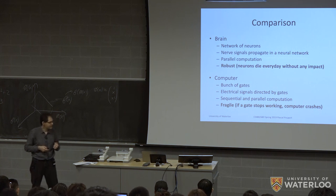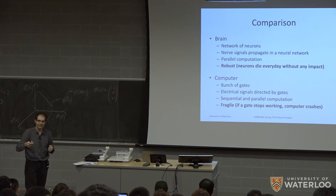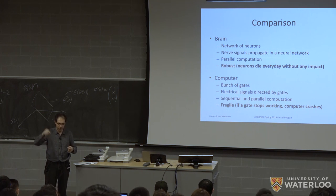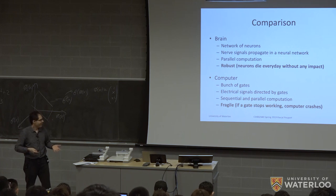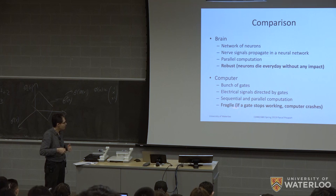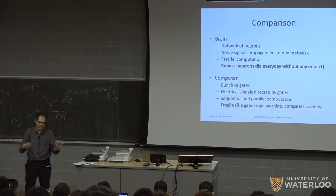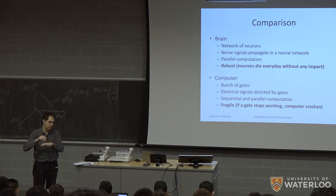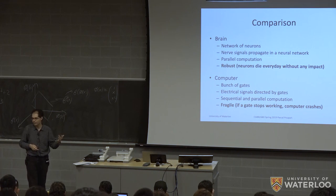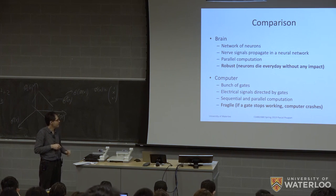Another big difference is that the brain is quite robust. Every day some neurons die and you don't realize it — you keep on functioning just fine. In comparison, computers are quite fragile. If one gate stops working, this could be critical. It's quite common that a computer will crash, and if one part stops working, it could be disastrous. There's still a lot of research on how to organize things to achieve the same level of robustness.